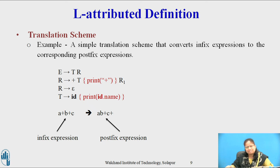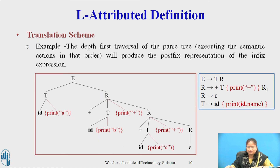Example: a simple translation scheme that converts an infix expression to the corresponding postfix expression. E → T R, R → + T { print('+') } R1, R → ε, and T → id { print(id.name) }. For the infix expression a + b + c, the corresponding postfix expression is a b + c +. The depth-first traversal of the parse tree, executing the semantic actions in that order, will produce the postfix representation a b + c + of the infix expression a + b + c.